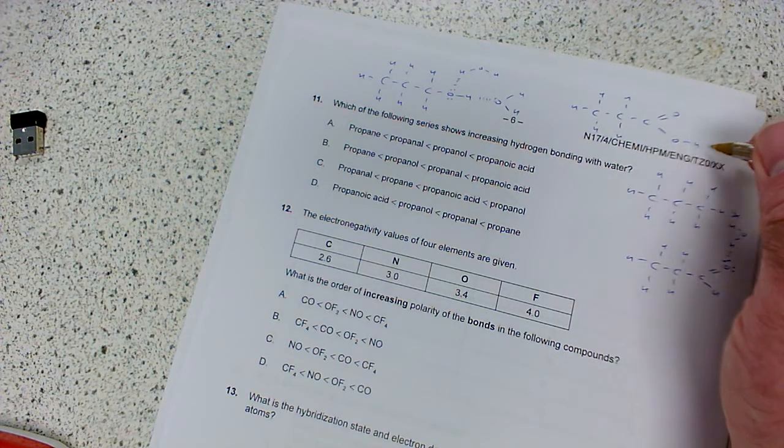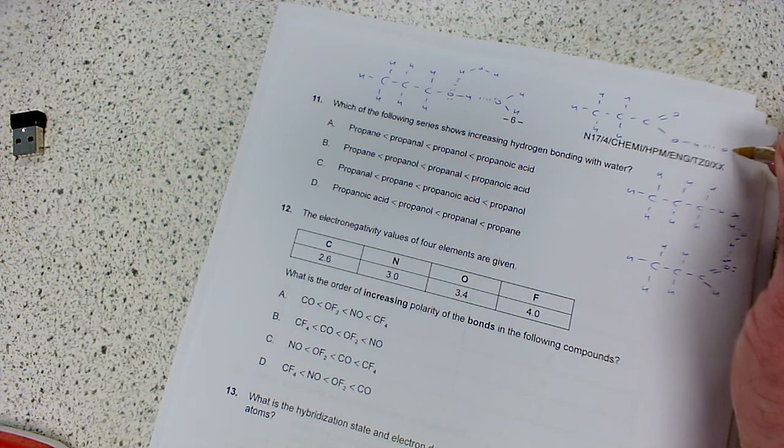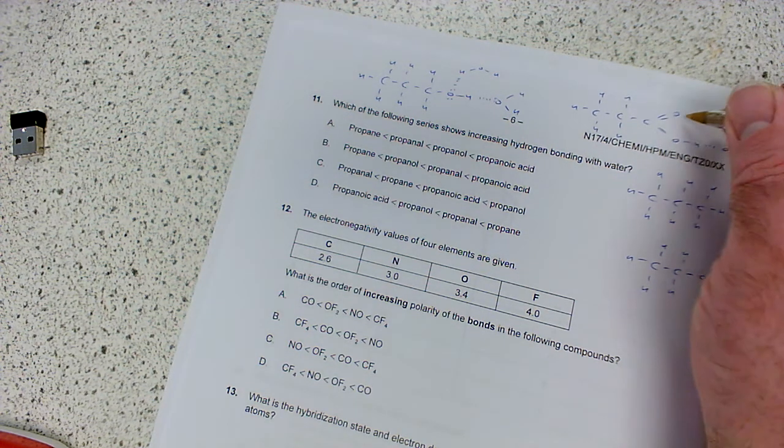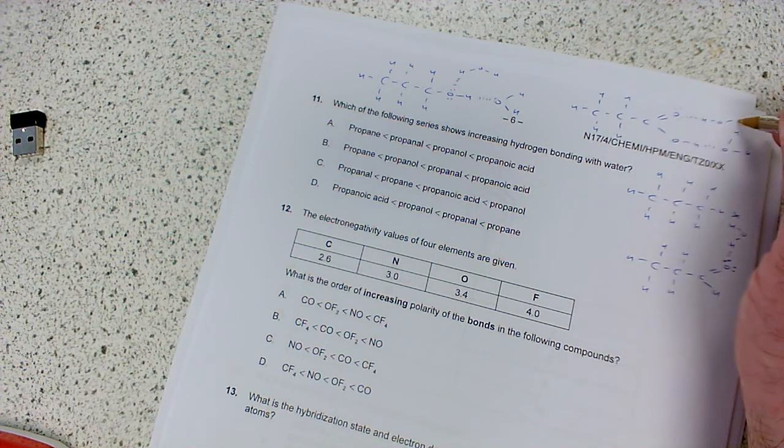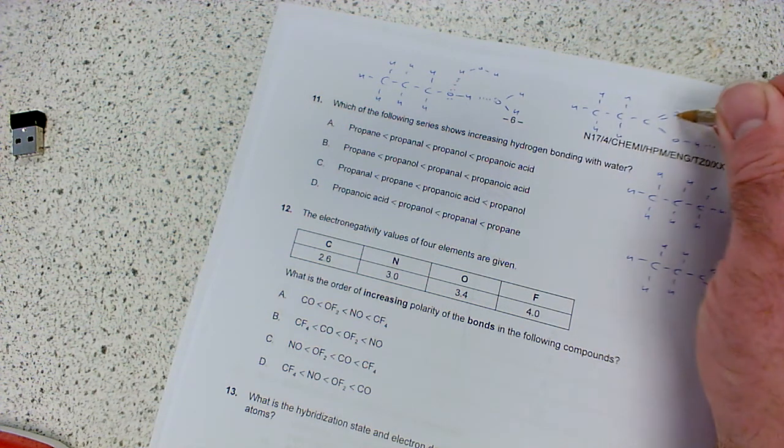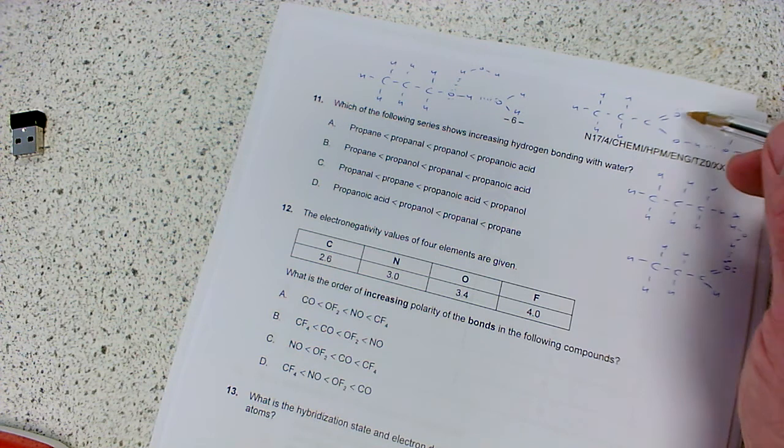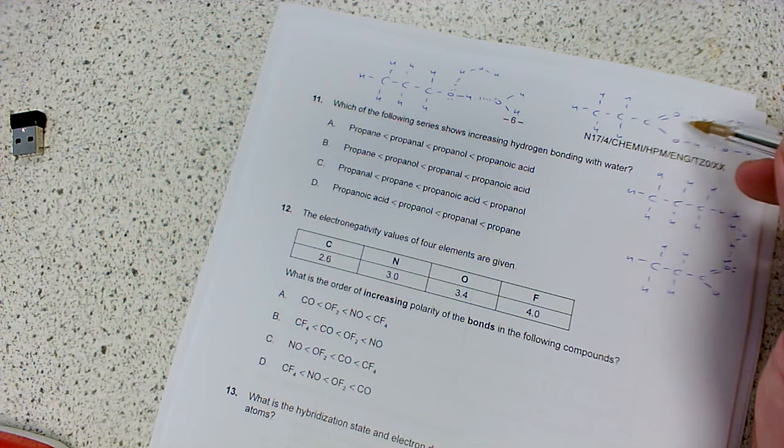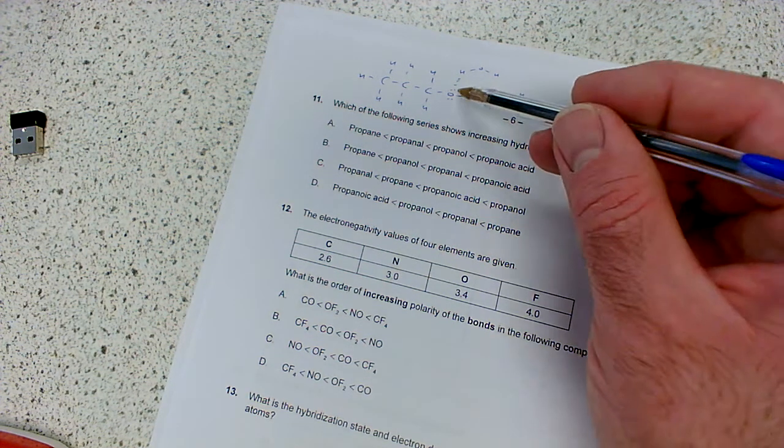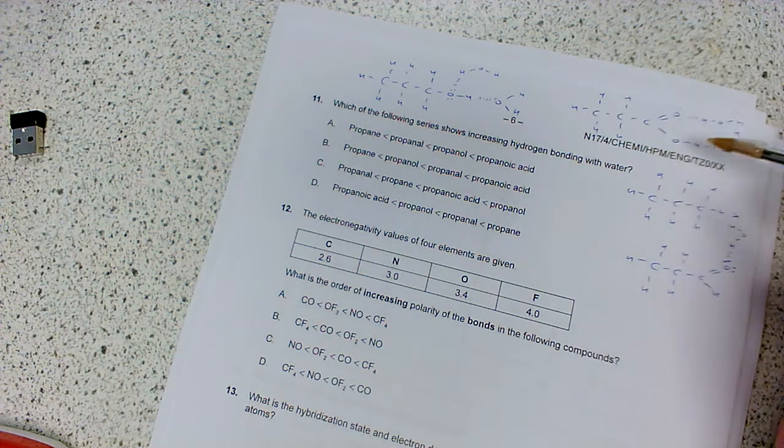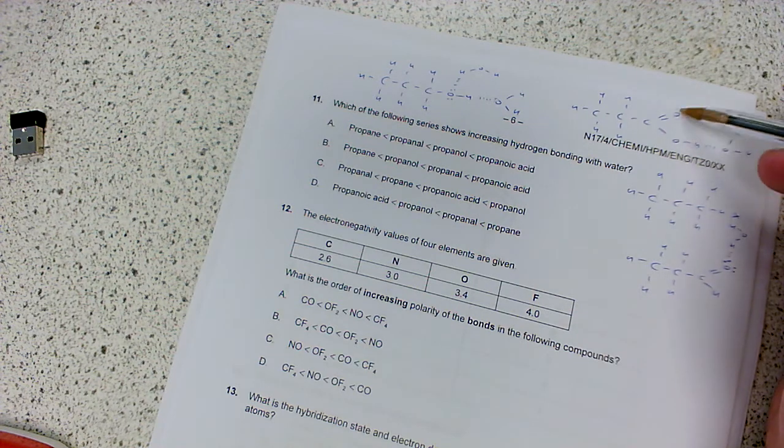Propanoic acid: one, two, three carbons, C double bond O and an OH. Now we've got the OH bond, we can form hydrogen bonds with water like so, and it's also got lone pairs on this oxygen which can also then form hydrogen bonds with water. Now we've got two oxygen atoms versus just one, so we'll be able to form more hydrogen bonds.